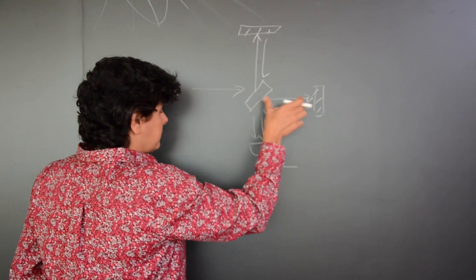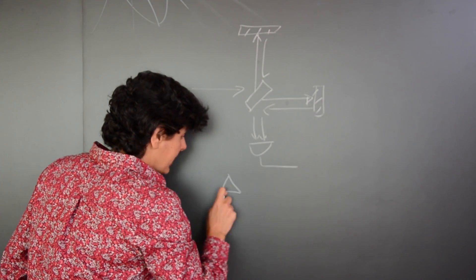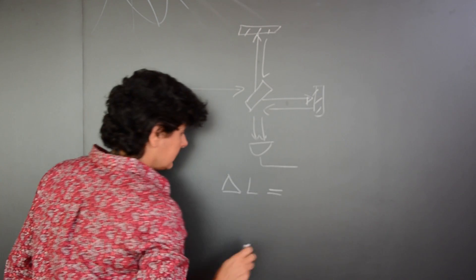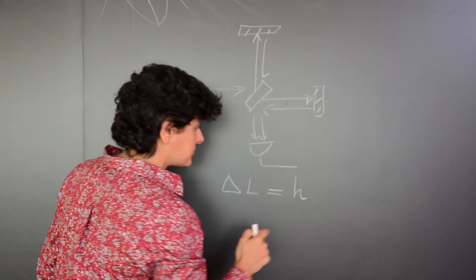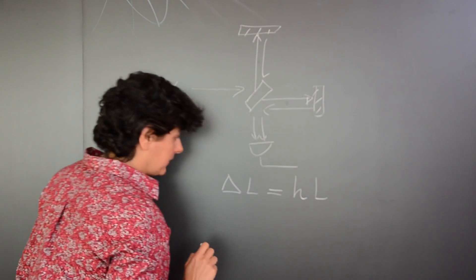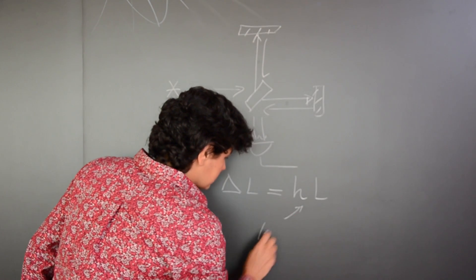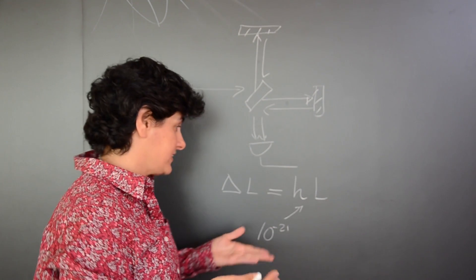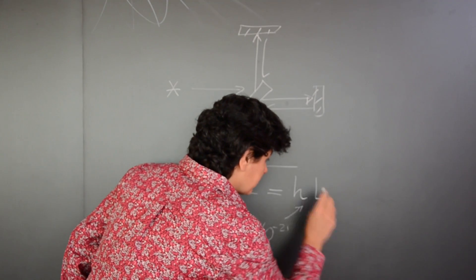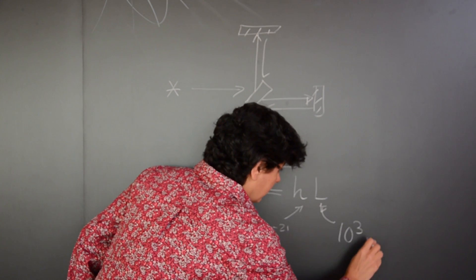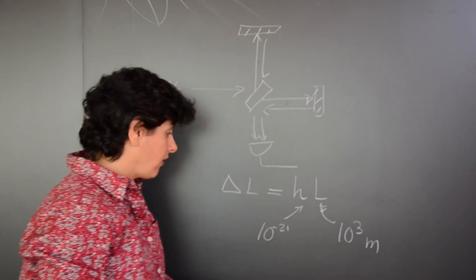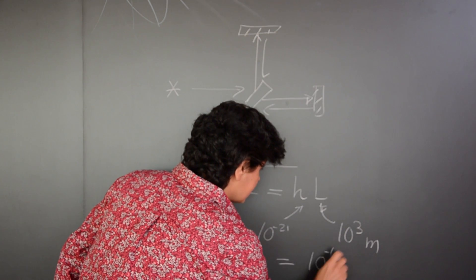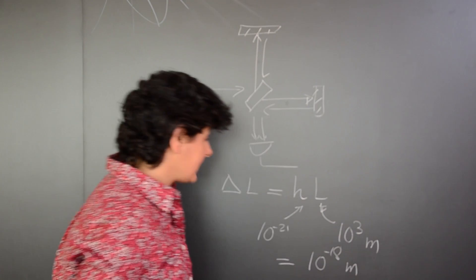So it turns out that if the gravitational wave comes by, it changes the distance between the laser and these mirrors by an amount delta L that's equal to H, which is the strength or amplitude of the gravitational wave, times L. So H is given to us by nature. It's about 10 to the minus 21 for a neutron star binary system. L is something we control and we make it about a kilometer large, the longest detector we can think of, and together then we have the business of measuring 10 to the minus 18 meters. And that's how we measure a gravitational wave.